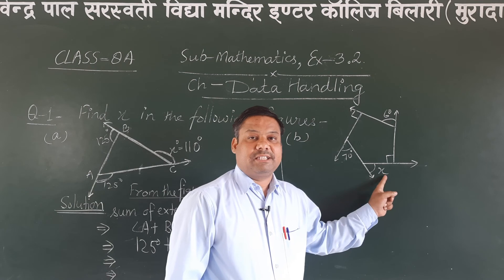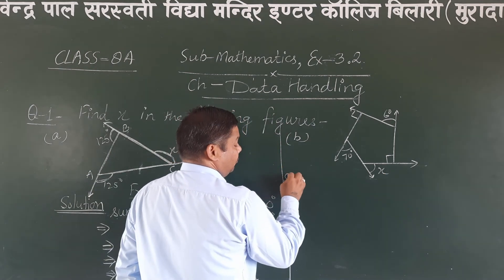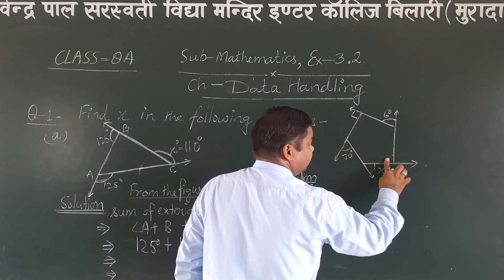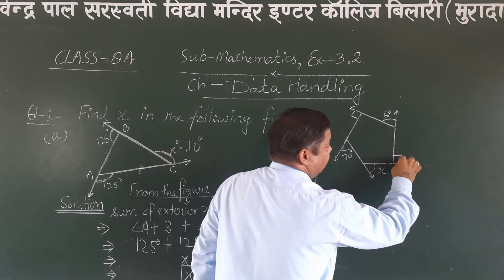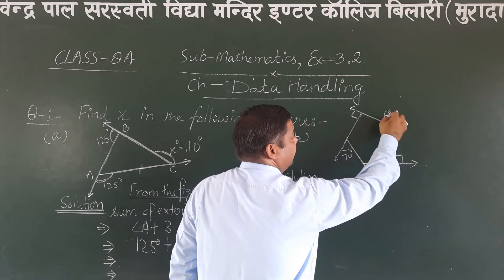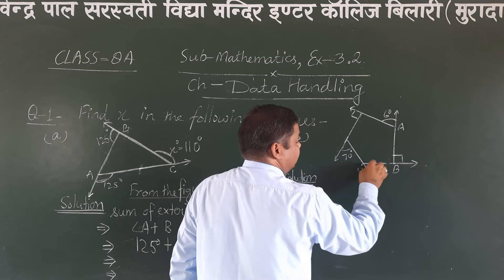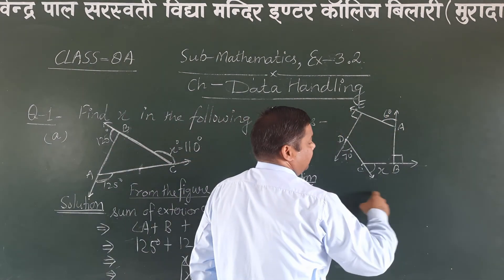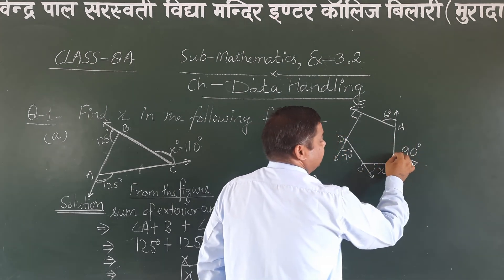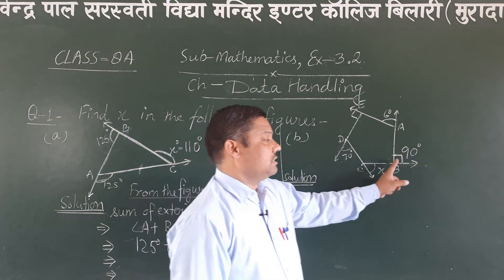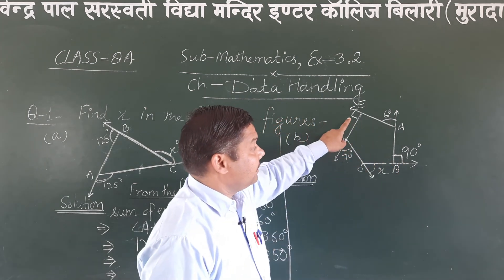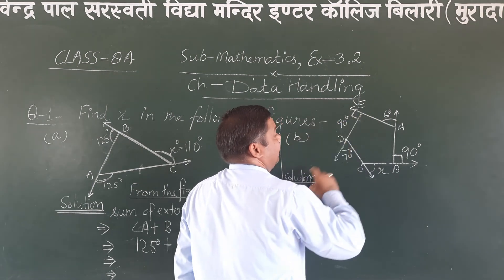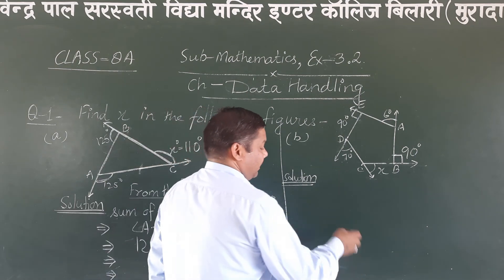In the same way we can find the value of x in the second figure. From the figure, the exterior angle marked is 60 degrees. Notice this square sign — whenever this square sign appears, it indicates an exterior angle. This square sign always means 90 degrees, showing that this angle measures 90 degrees. From the figure, the sum of exterior angles equals 360 degrees.